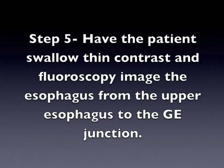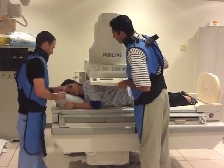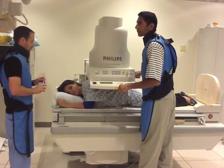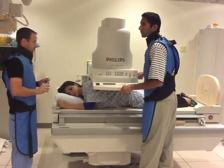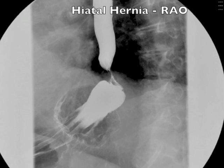Step 5: Have the patient swallow thin contrast and fluoroscopy image the esophagus from the upper esophagus to the GE junction. Tell the patient that you will count to 3 and have them swallow on 3. Begin fluoroscopy when you count to the number 2. This is an example of a hiatal hernia in the RAO position.